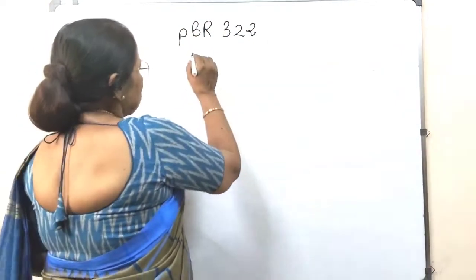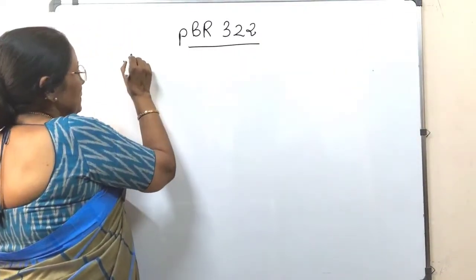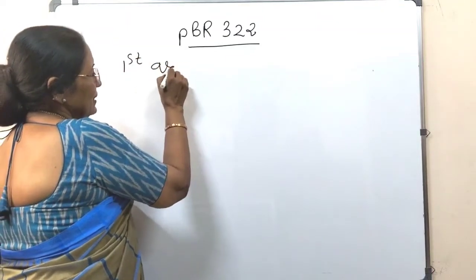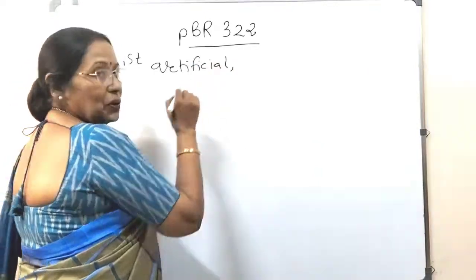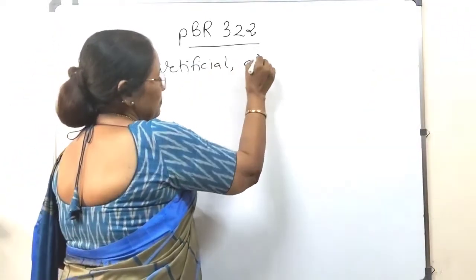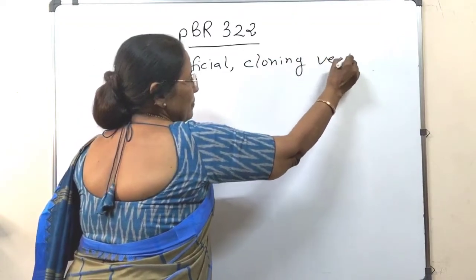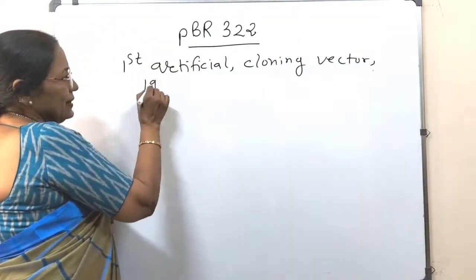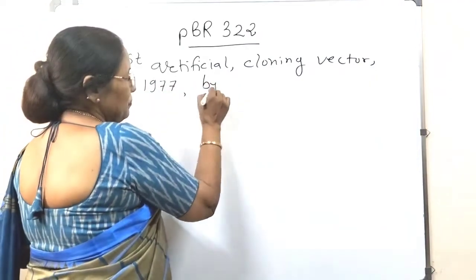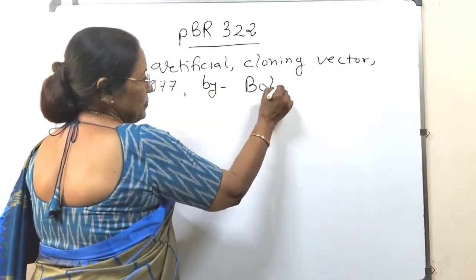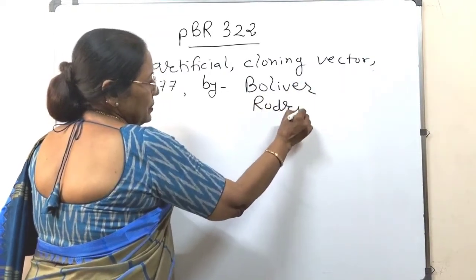What is PBR 322? It is the first artificial cloning vector, prepared in 1977 by Bolivar and Rodriguez.